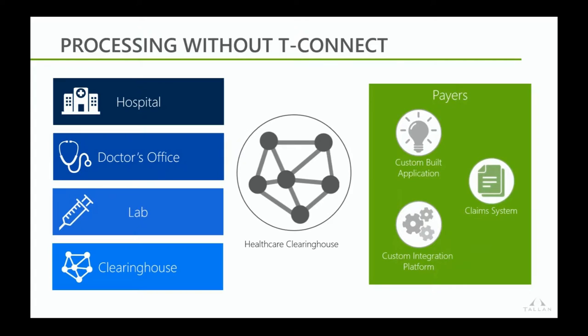Another problem area around clearinghouses is a lack of transparency into the processing. For example, sending and receiving claims — what's my error rate? Are they actually being processed? The reporting, metrics, and all those things that typically come with a robust EDI management system are pretty lacking. And then finally, response time. We've heard from a lot of clients that anything they need changed — adding a new service, a transaction type, or a new trading partner — can be a very long process, weeks or maybe months.